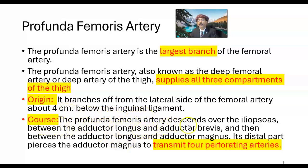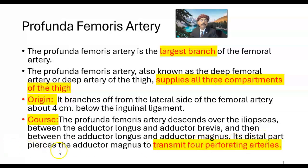The profunda femoris artery descends over the iliopsoas between the adductor longus and adductor brevis, and then between adductor longus and adductor magnus. Its distal part pierces the adductor magnus to transmit four perforating arteries.